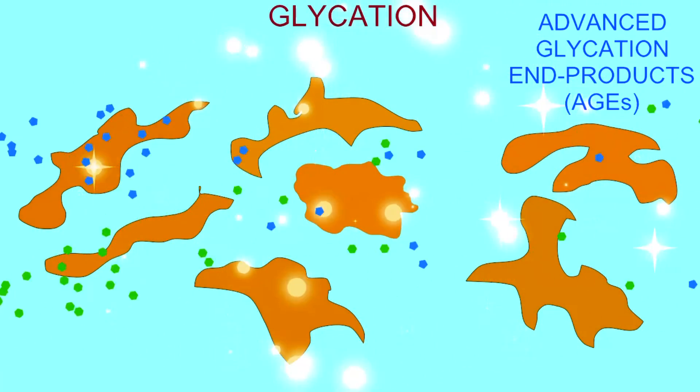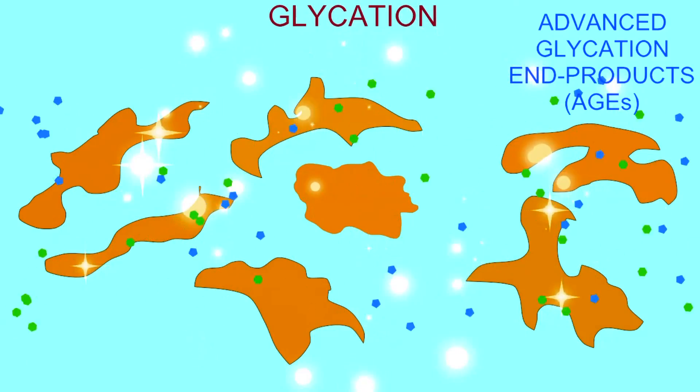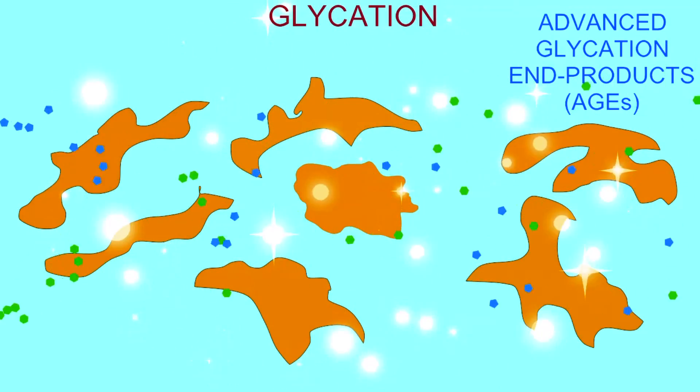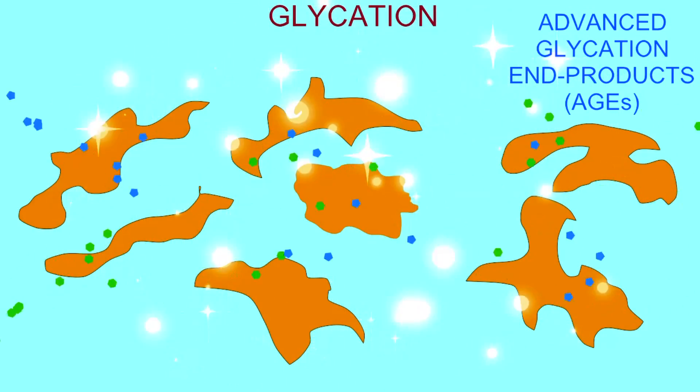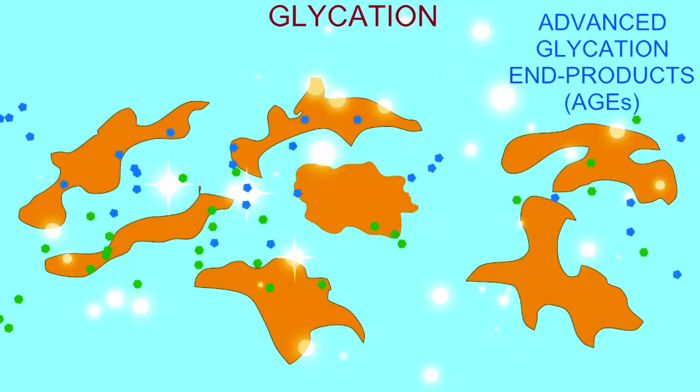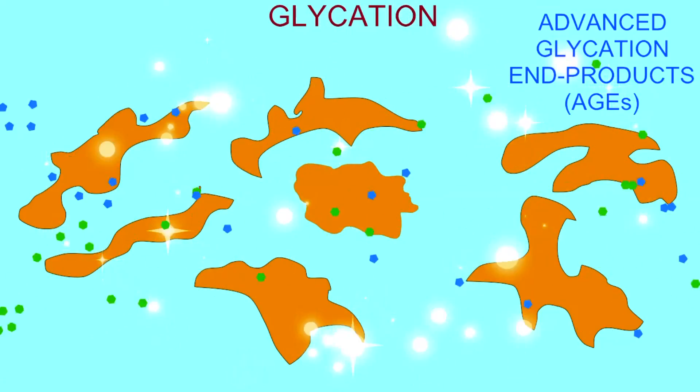Glycation is thought to be one of the major causes of the general deterioration of cellular function during aging.